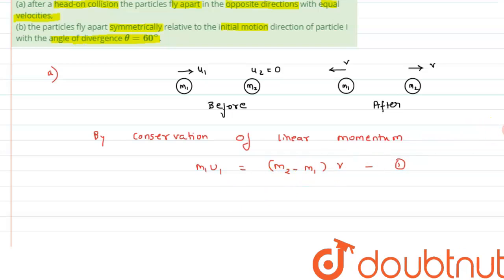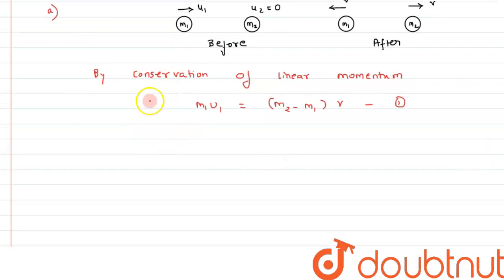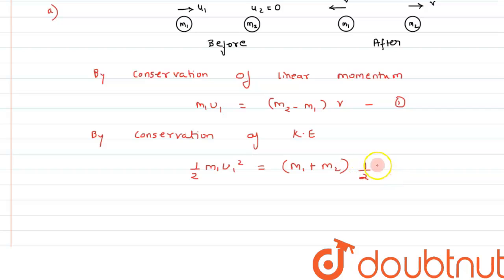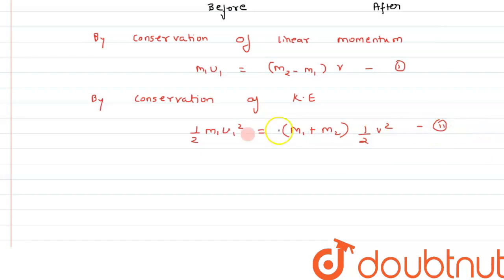By conservation of kinetic energy, kinetic energy before collision is (1/2)*m1*u1² and that equals (1/2)*(m1 + m2)*v², since both particles are moving with the same velocity. Let's call this equation number two. We are interested in finding the ratio of masses.